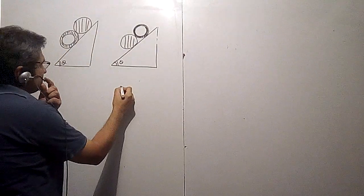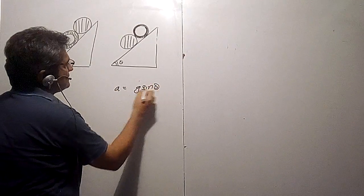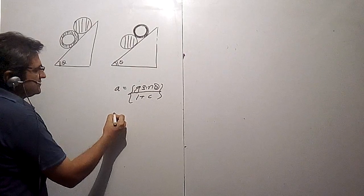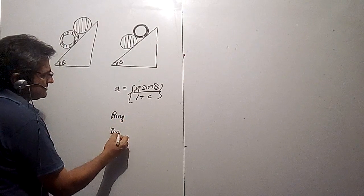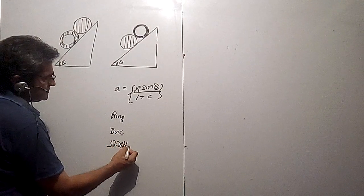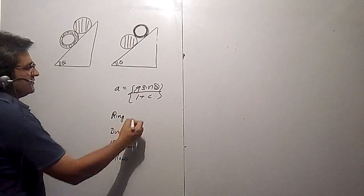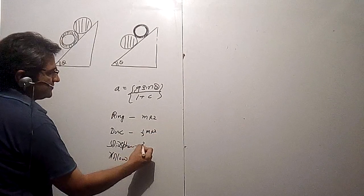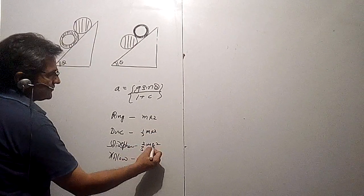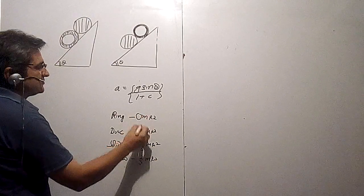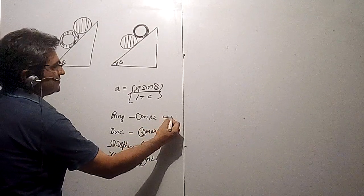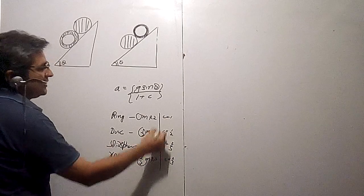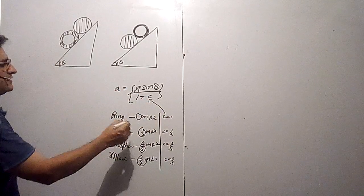The formula I suggest here is: a = g sinθ / (1 + C), where C is easy to remember. For a ring, moment of inertia is mr², so C = 1. For a disc, it is ½mr², so C = ½. For a solid sphere, it is (2/5)mr², so C = 2/5. For a hollow sphere, it is (2/3)mr², so C = 2/3. Just take this coefficient as C and put it into the formula to immediately get the acceleration.